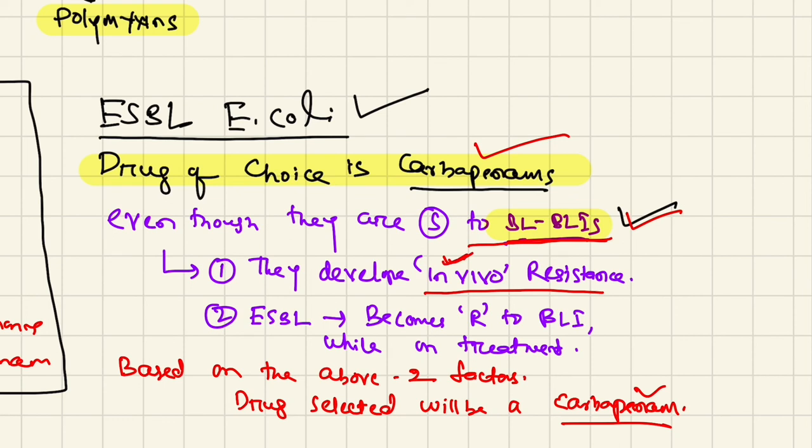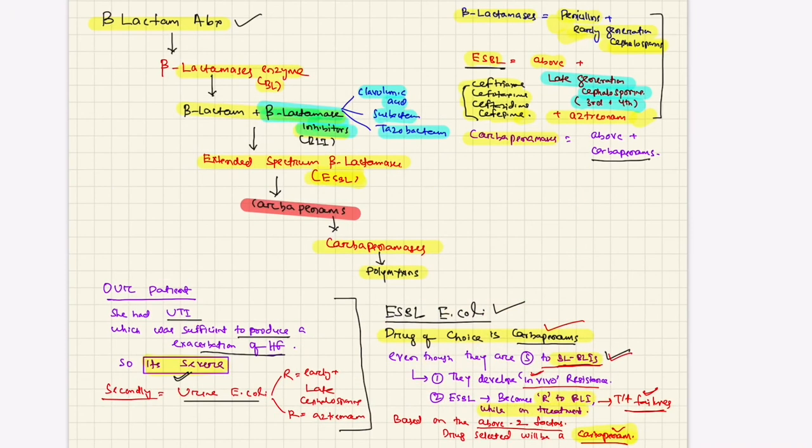Secondly, bacteria that are sensitive to BLI in vitro and you give them BL-BLIs like amoxicillin-clavulanate or piperacillin-tazobactam become resistant to BL-BLIs while on treatment, leading to treatment failures. Initially it was sensitive, but as the antibiotic works on the bacteria, they become resistant while the patient is being treated. These two factors mean the drug selected will be carbapenems, because we're dealing with a serious infection that produced heart failure. We have to give an antibiotic that will definitely work, and that will be carbapenems. Thank you very much.